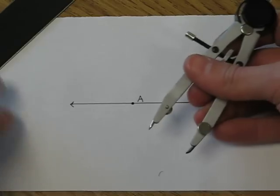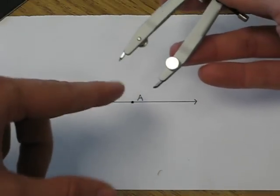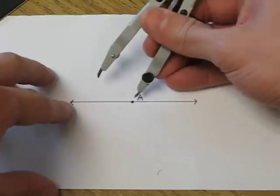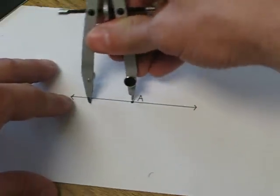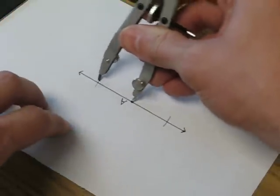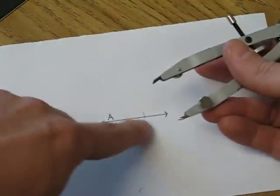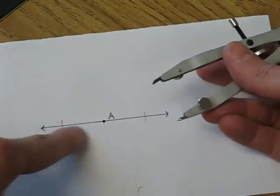The first thing I need to do is take my compass and with any measurement of the radius, mark an arc on each side of point A. And these are going to be equidistant as if A is the midpoint.